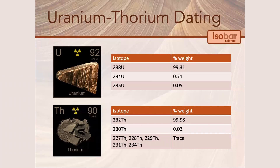Uranium and thorium exist in several different isotopic forms, as shown in this table here. The majority of natural uranium, more than 99% by weight, exists in the form of uranium-238, followed by only about 0.71% in the form of uranium-234, and only about 0.05% uranium-235.